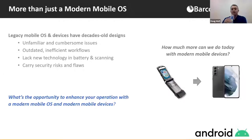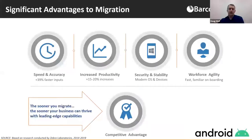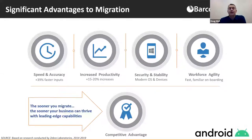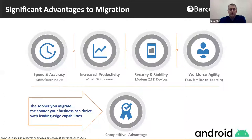The move from 90s-era text-based data collection to touch-based solutions is possible with Android. Research shows 39% faster typing speeds, improvements driven by faster apps, better Wi-Fi connectivity, and simplified workflows. Longer uptime comes from hot-swappable batteries, with a measured 15 to 20% increase in overall productivity. Improved scan engines handle difficult barcoding conditions, fewer keystrokes with familiar touch interfaces result in 60% fewer errors overall.